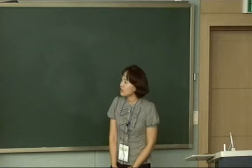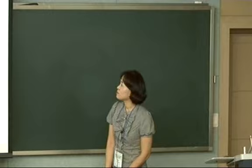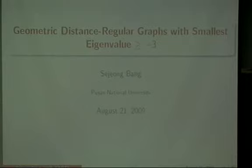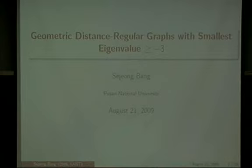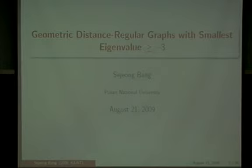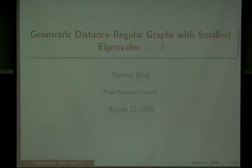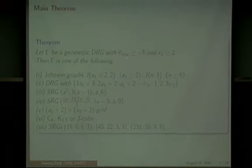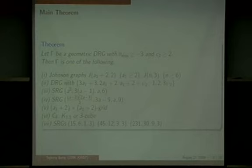Today I would like to talk about geometric distance regular graphs. A distance regular graph is called geometric if it is the point graph of a partial linear space. The main theorem of this talk is the classification of geometric distance regular graphs with smallest eigenvalue at least minus 3 and intersection number C2 at least 2. The main theorem states: if Gamma is a geometric DRG with smallest eigenvalue at least minus 3 and some parameter at least 2, then Gamma must be one of the following graphs.